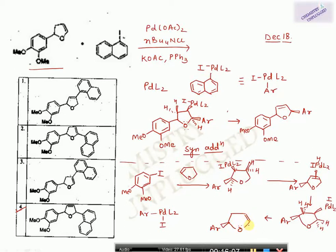You also need to check for hydropalladation in addition to all other steps. However, if silver carbonate is given in the reaction, there is no hydropalladation — the reaction stops at the first beta-elimination stage. If silver carbonate is present, hydropalladation will not occur.